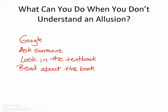At this point in the lesson, I would ask the students: what can you do if you don't understand an allusion? I expect to hear that you can Google it, ask someone like the teacher, look in the textbook, or read about the book. I could add a few sites that students could use to read summaries and analyses — shmoop.com, enotes.com, sparknotes.com — all have great summaries and analyses written by people who hold master's degrees or PhDs.